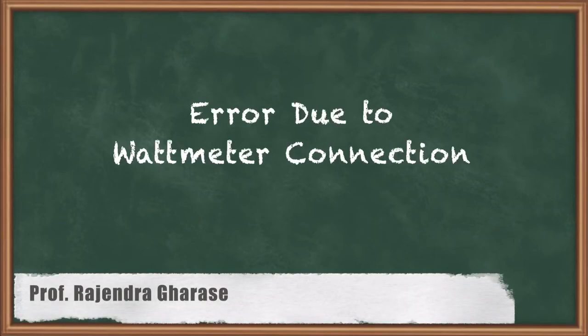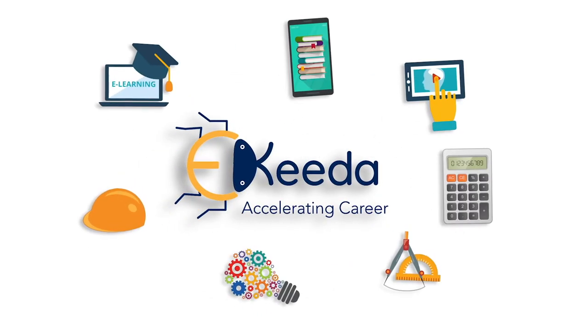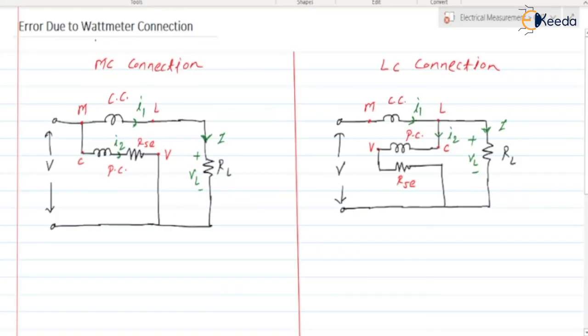Hello friends. In this video we are going to discuss the error in a wattmeter due to the wattmeter connection or the type of wattmeter connection. In EDM wattmeters we have two types of connections: one is the MC connection and the second one is the LC connection. In the MC connection the terminals M and C are shorted, whereas in the LC connection terminals L and C are shorted.